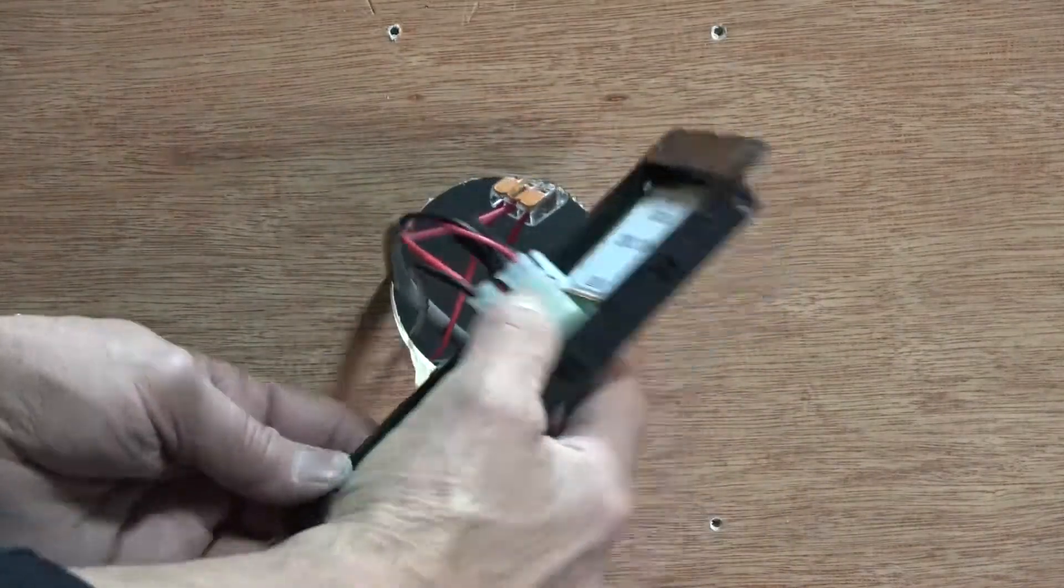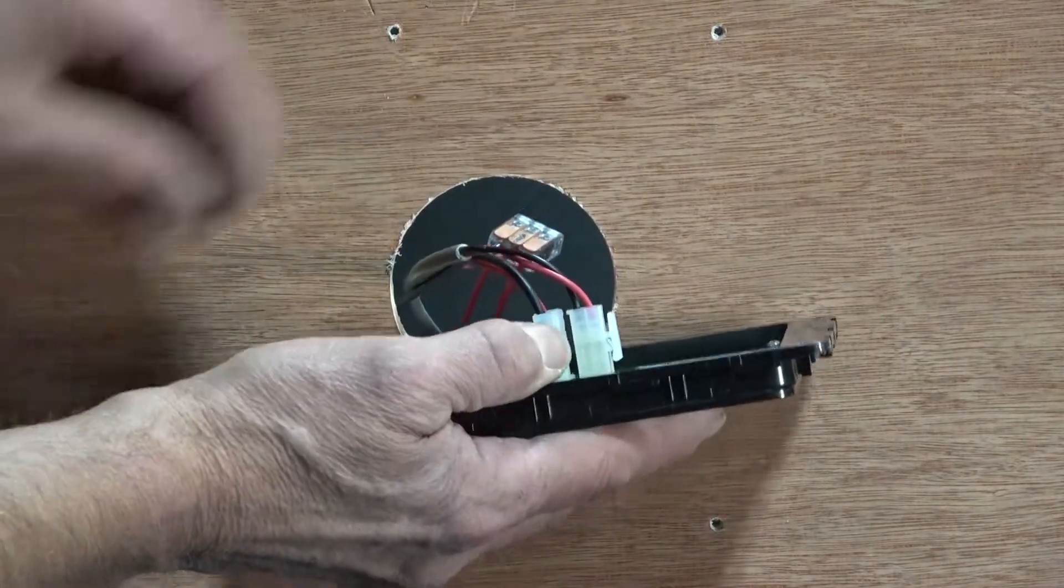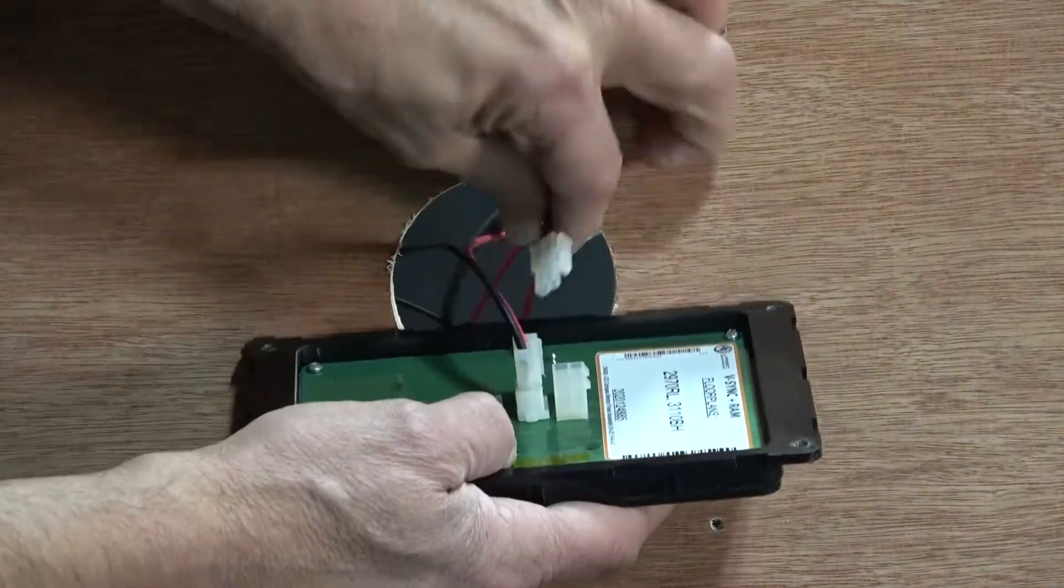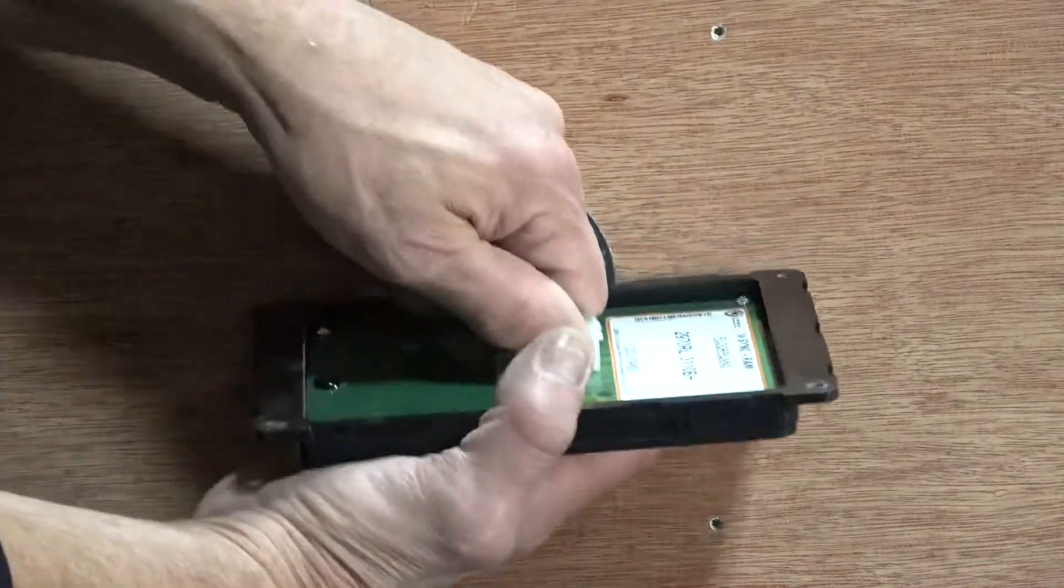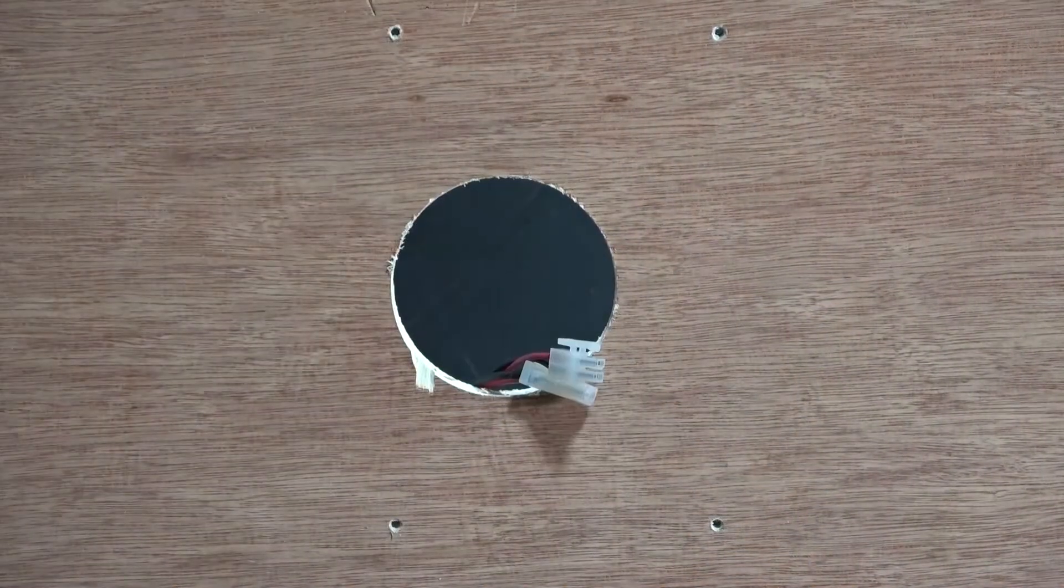Once the touchpad is free, remove the connections from the rear starting with the CAN bus connections. If the touchpad has a terminating resistor in one of the CAN bus ports, set it aside for the replacement controller. Next, remove the power harness and then remove the touchpad.